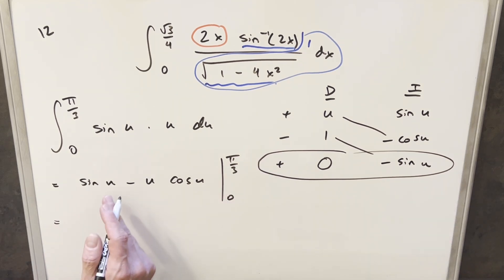Now evaluating this at pi over 3, first we're going to have sine of pi over 3. That's just going to be square root of 3 over 2, basically what we found before. Then here, plugging in pi over 3, we're going to have pi over 3. And for u, cosine of pi over 3, that's just going to be 1 half.